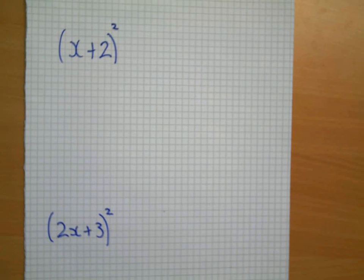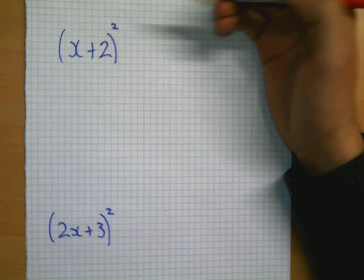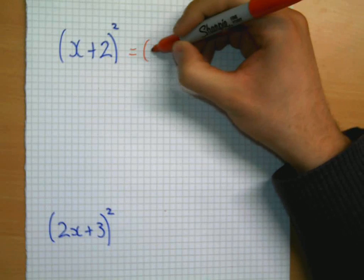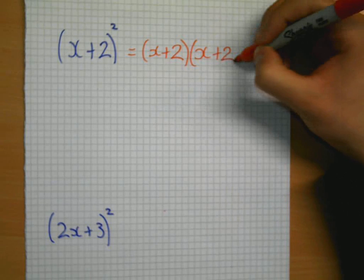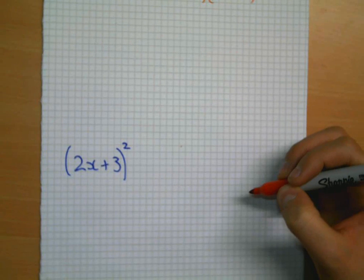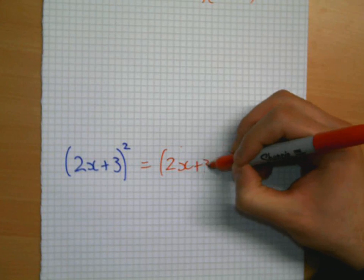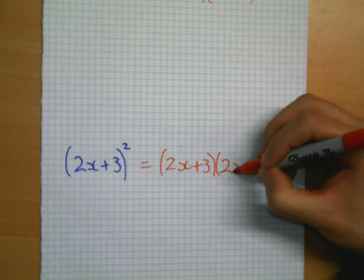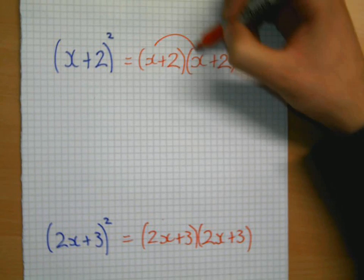Now, these look slightly different. But they are still expanding quadratics. This doesn't mean x squared and 2 squared. What this means is x plus 2 multiplied by itself, x plus 2. And again, here, we mean the exact same thing: 2x plus 3 multiplied by 2x plus 3.